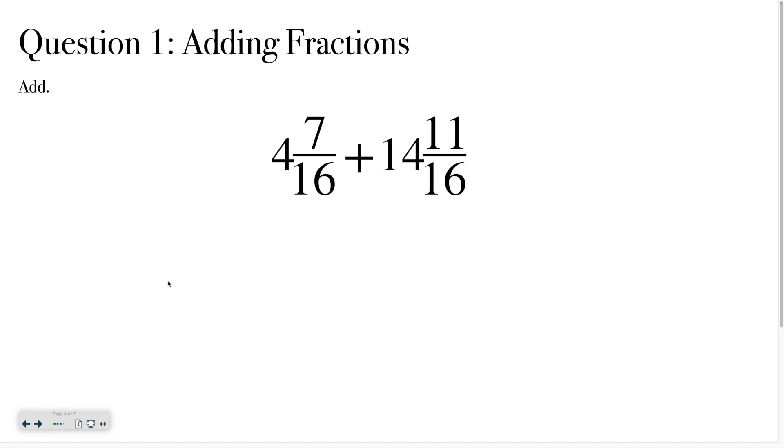All right, we have 4 and 7 sixteenths plus 14 and 11 sixteenths. Go ahead and add and solve. See what you get. Good luck. All right, for this problem, hopefully you ended up at 19 and 1 eighth. You can see I started by taking the 4 and the 14. I added those together to get that 18. And then I did 7 sixteenths plus 11 sixteenths, which gave me 18 sixteenths. Which is an improper fraction because it's the biggest numbers on top. So that would become 1 and 2 sixteenths. And then I saw the 2 sixteenths can be reduced to a 1 eighth. So I had 18 plus 1 to give me that 19. And then 2 sixteenths became 1 eighth. So that's how I ended up at 19 and 1 eighth. If you have questions about that, please be sure to reach out for some help. I'm happy to help you.